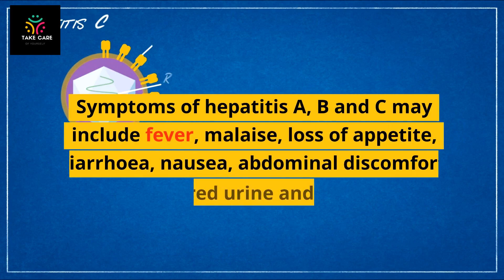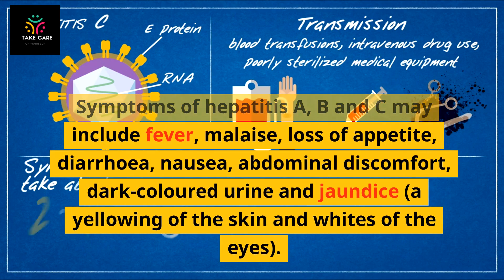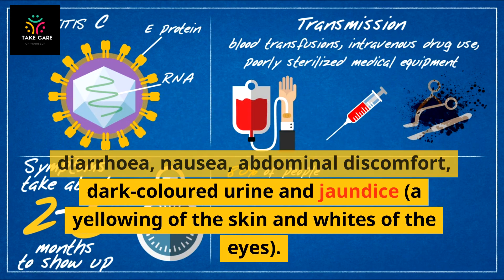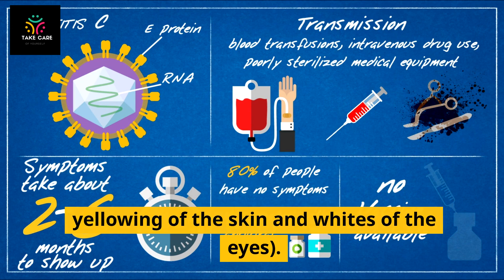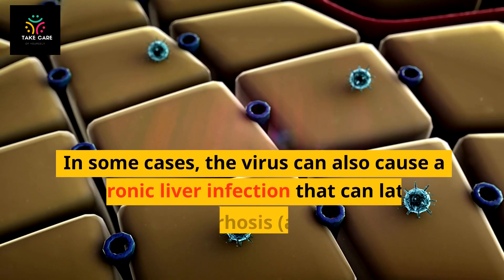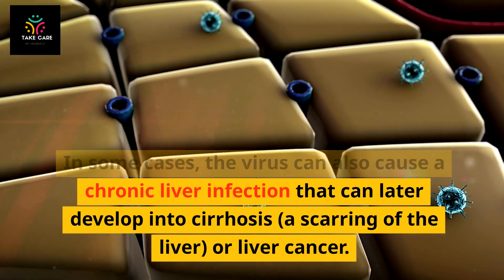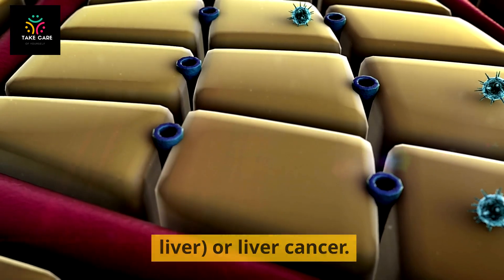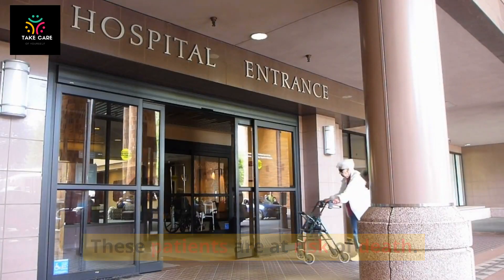Symptoms of hepatitis A, B and C may include fever, malaise, loss of appetite, diarrhea, nausea, abdominal discomfort, dark-colored urine and jaundice — a yellowing of the skin and whites of the eyes. In some cases, the virus can also cause a chronic liver infection that can later develop into cirrhosis, a scarring of the liver, or liver cancer. These patients are at risk of death.